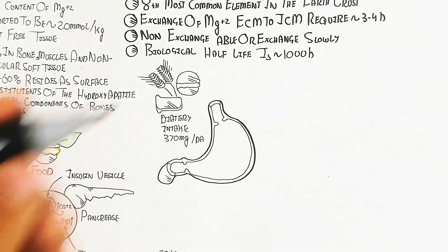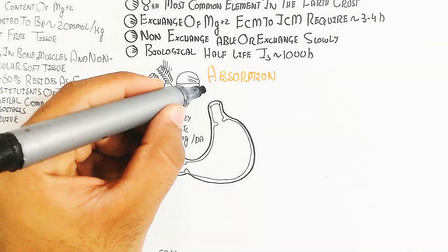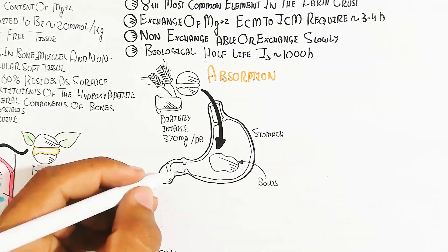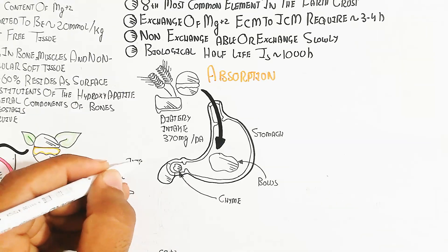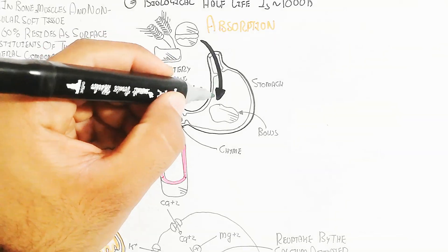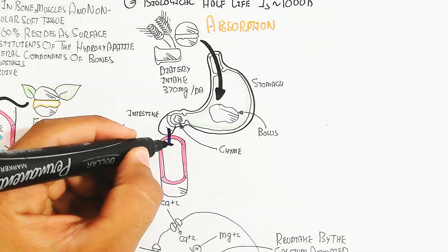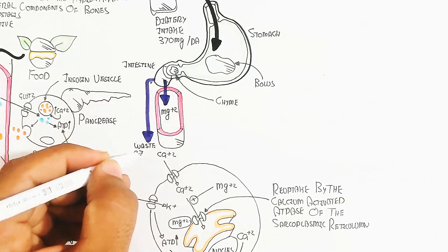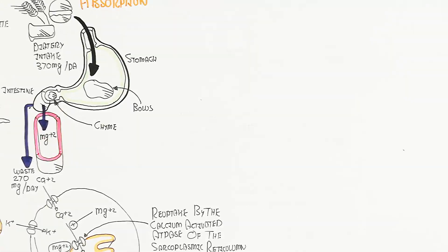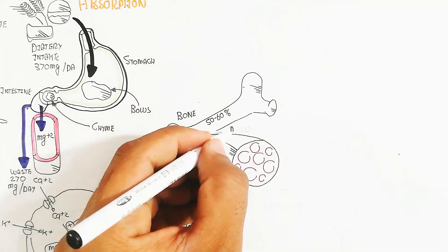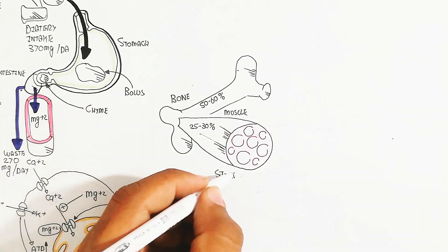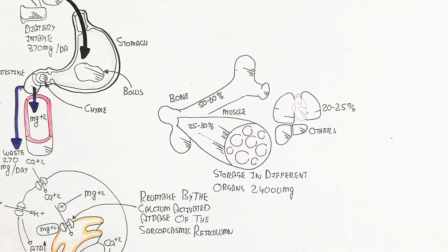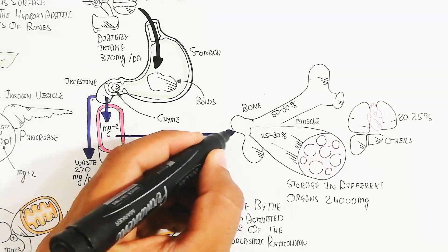Dietary intake is 370 mg per day when we consume. This enters the stomach, where the bolus converts to chyme, and magnesium absorption occurs into the blood circulatory system. Waste of 270 mg per day is excreted as feces. Magnesium is deposited into several tissues: bone 50-60%, muscle 25-30%, and 20-25% in other organs, with total storage of 24,000 mg.